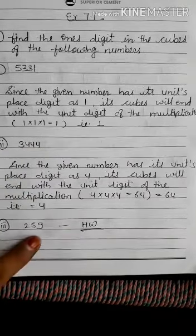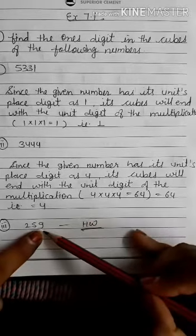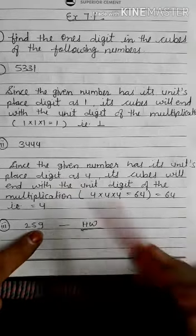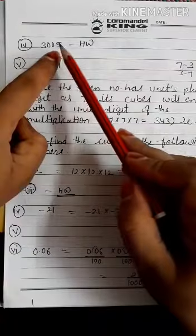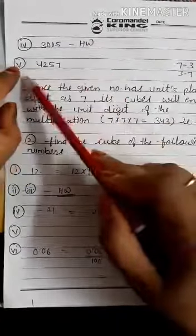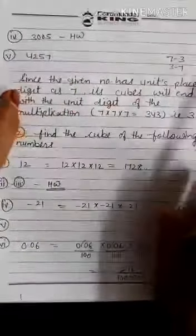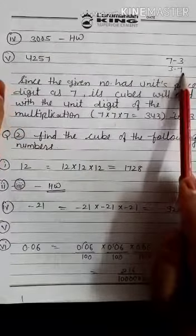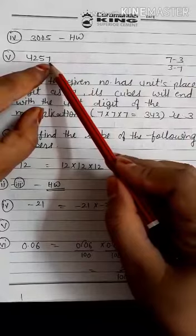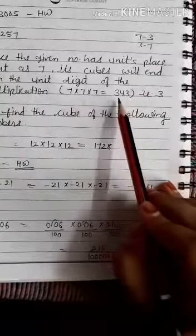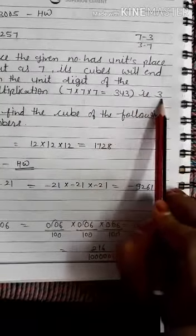Question number 3: you try yourself — if the last digit is 9, then the cube also ends in 9. Write down its language and complete this question. Question number 4: last digit is 5, so the cube also ends in 5 — try yourself. Question number 5: 4257 — last digit is 7, so the cube root ends in 3. Seven cubed is 343, and the last unit digit is 3. Yes, the answer is 3.